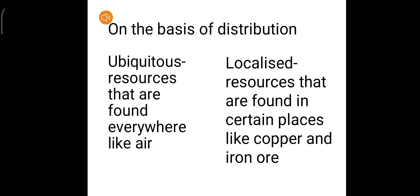On the basis of distribution, resources are classified into two categories: ubiquitous or localized. Ubiquitous resources are those which are found everywhere, like air — we have air in every area. Localized resources are those which are found only in certain places, like copper and iron ore. Iron ore is found only in special places, so these are called localized resources.